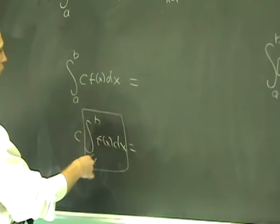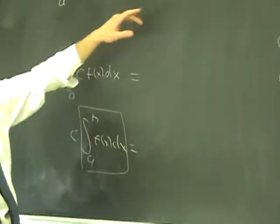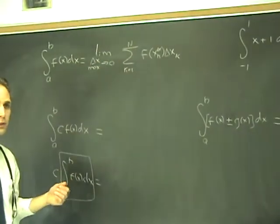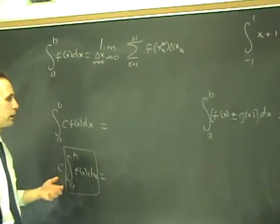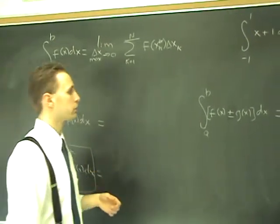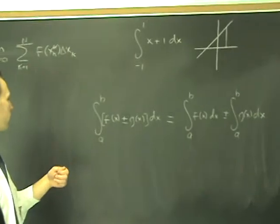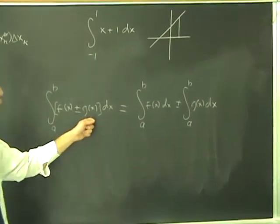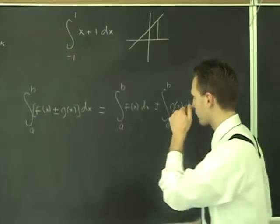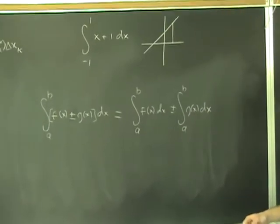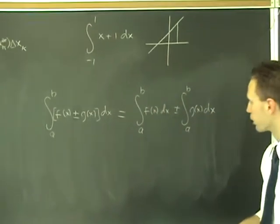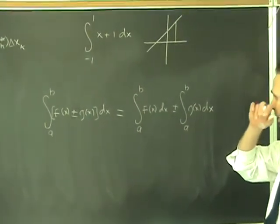Reason being is because this is nothing but a fancy sum anyway. So most of the properties of summations are inherited by definite integrals because they are just sums. Second example here: the definite integral of a sum or a difference of functions is the sum or difference of the definite integrals of those functions, which means that you can break apart definite integrals with respect to addition or subtraction.